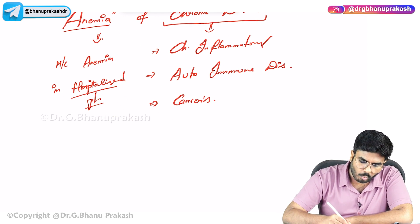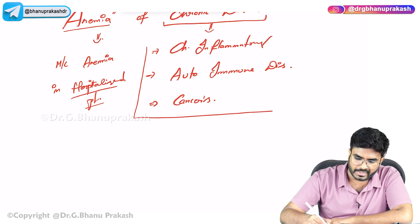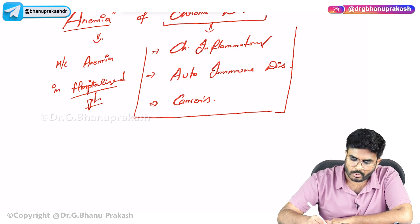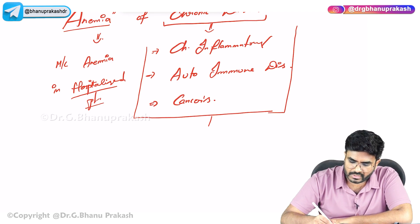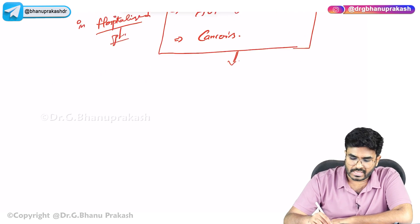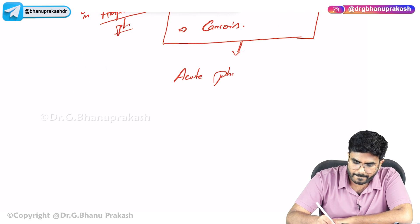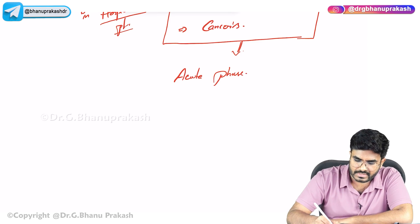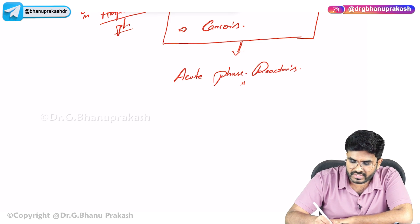The question is: why does anemia occur? Chronic inflammatory states produce acute phase reactants. One of the most important acute phase reactants is called hepcidin.